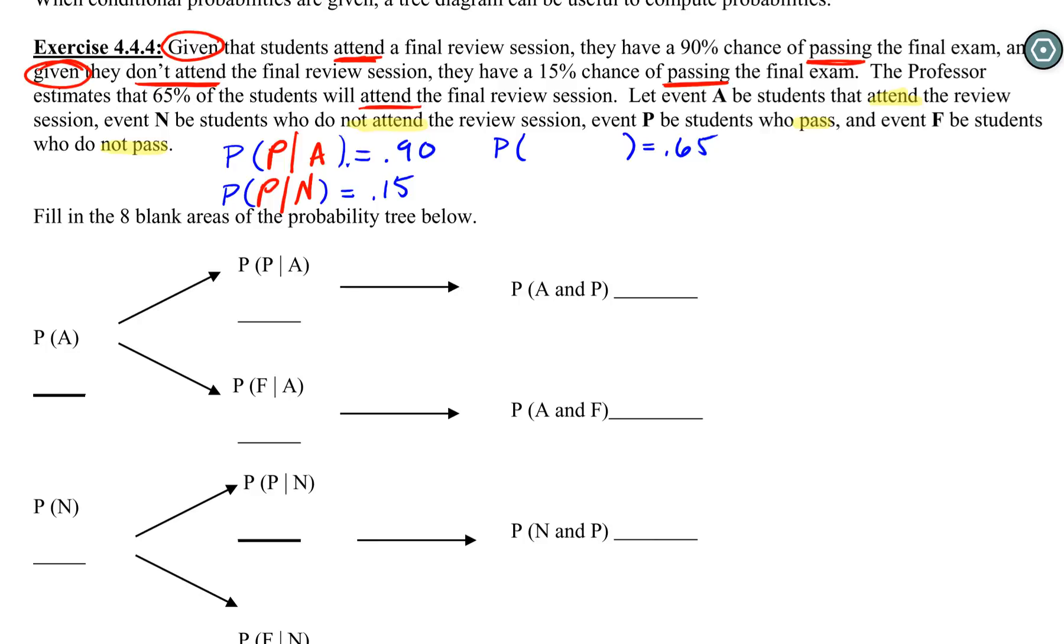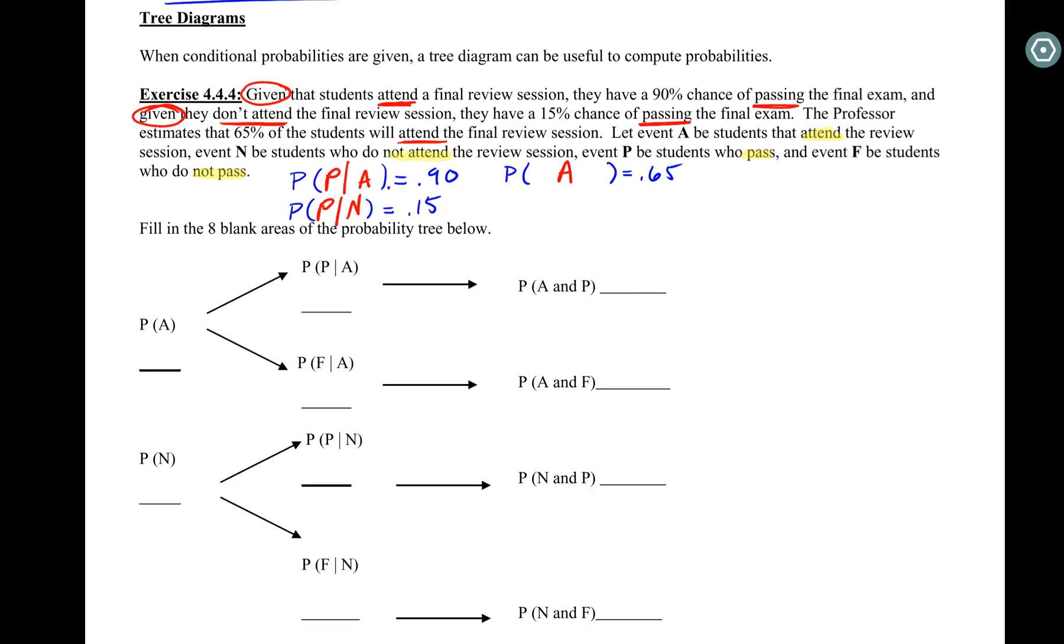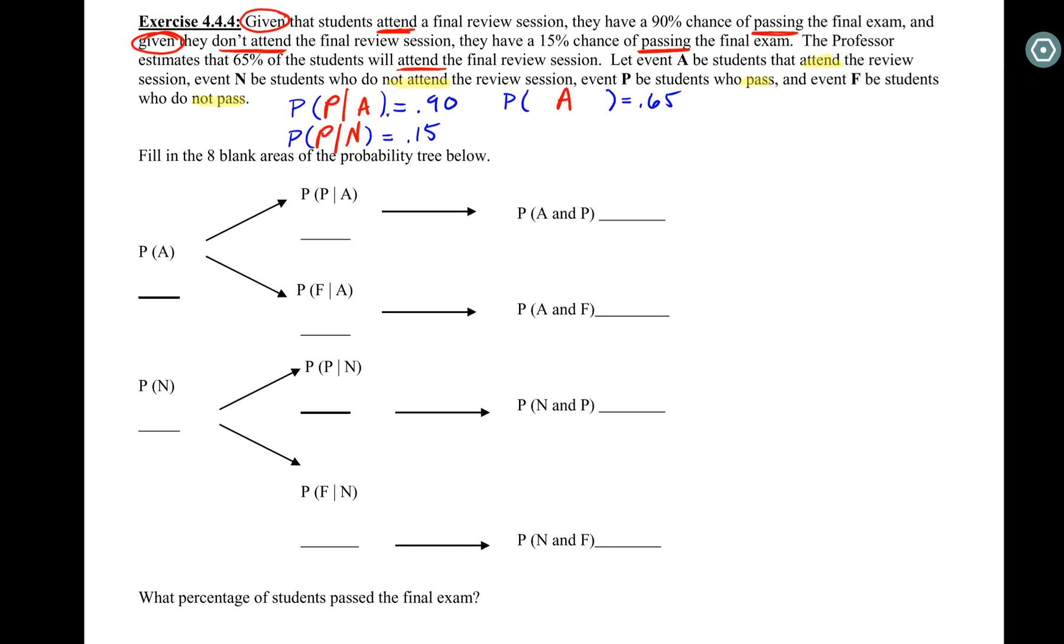Nothing about passing or failing, so there's our starting point. One way you can view these tree diagrams is that we're looking at the beginning, all students, and this is like a choose your own adventure. Two things can happen with all of our students at the beginning - they can either attend the review session or they cannot attend the review session.